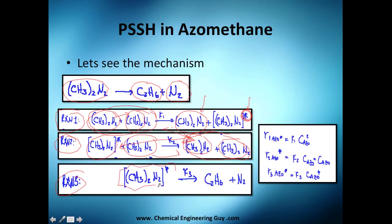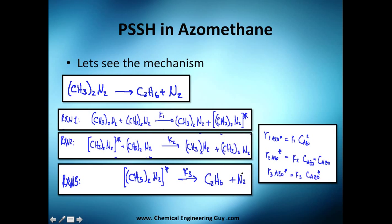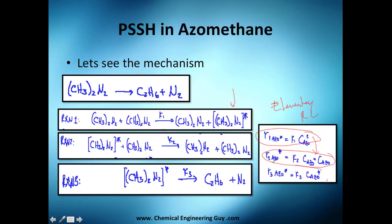The excited intermediate reacts to form C₂H₆ and nitrogen gas. Now let's calculate the rate of reaction for each step. These are elementary rate laws by definition, since we are already working with active intermediates. Applying elementary rate laws to the first, second, and third reactions gives us our three rate expressions. For the first step, since two azomethane molecules interact, it appears squared.